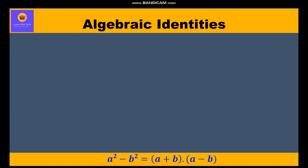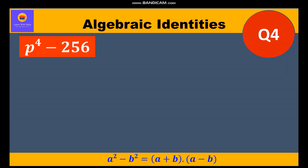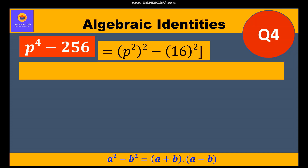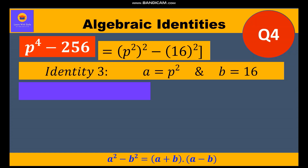Now let's move to question number 4: p⁴ - 256. Since Identity 3 involves squares, we write p⁴ as (p²)², and 256 = (16)². So this is Identity 3 where a = p² and b = 16. Its factors will be (p² + 16)(p² - 16).